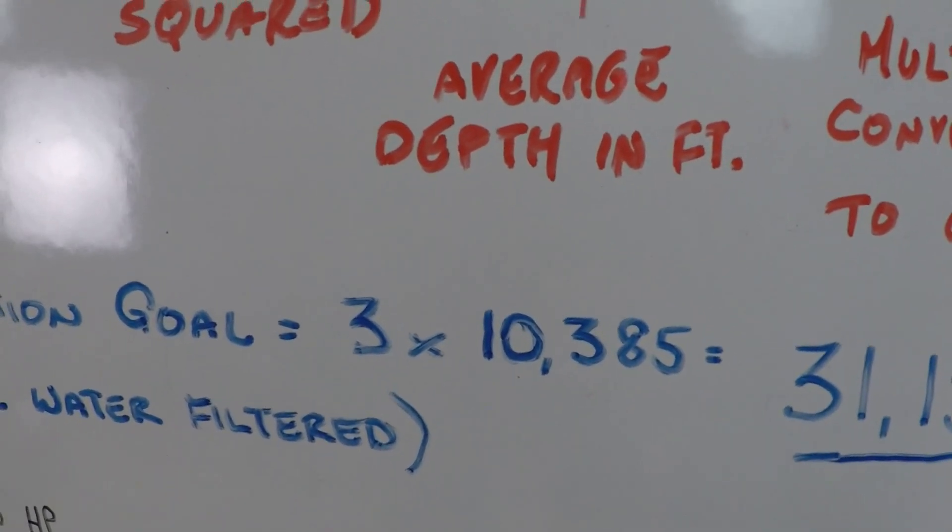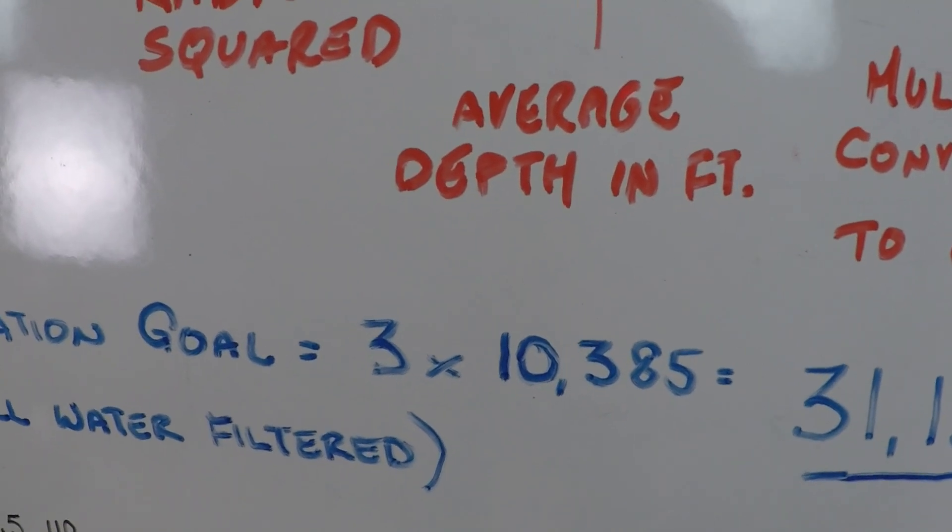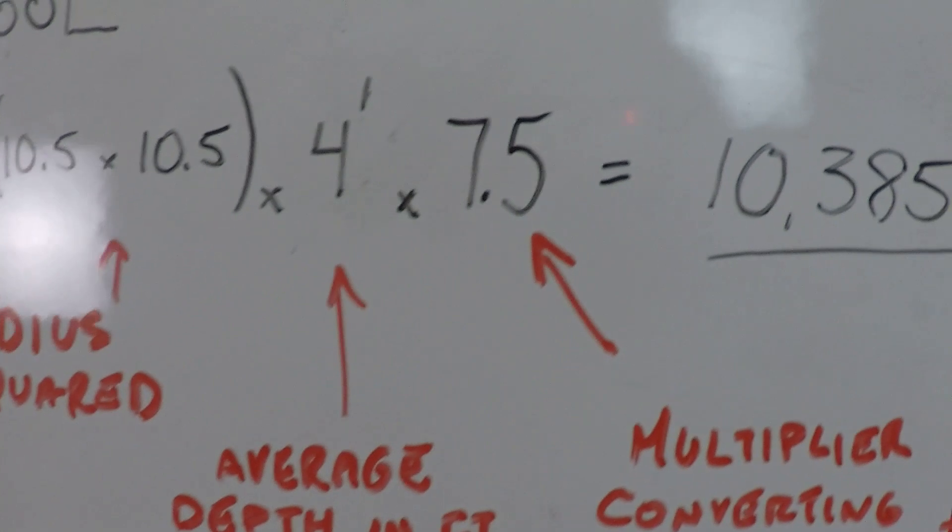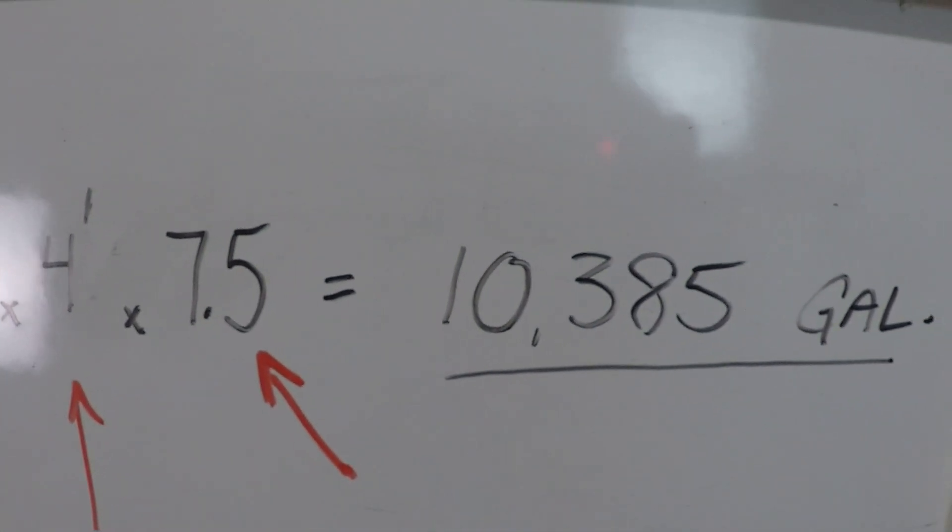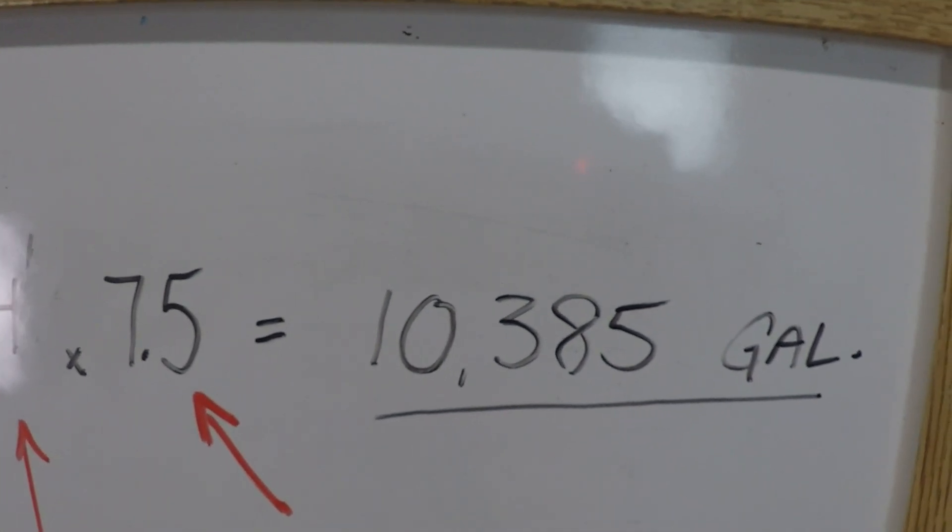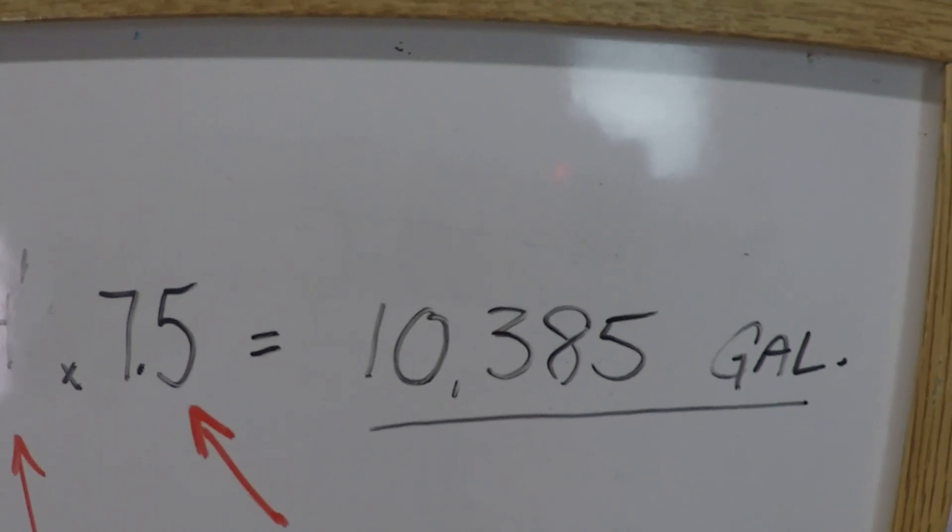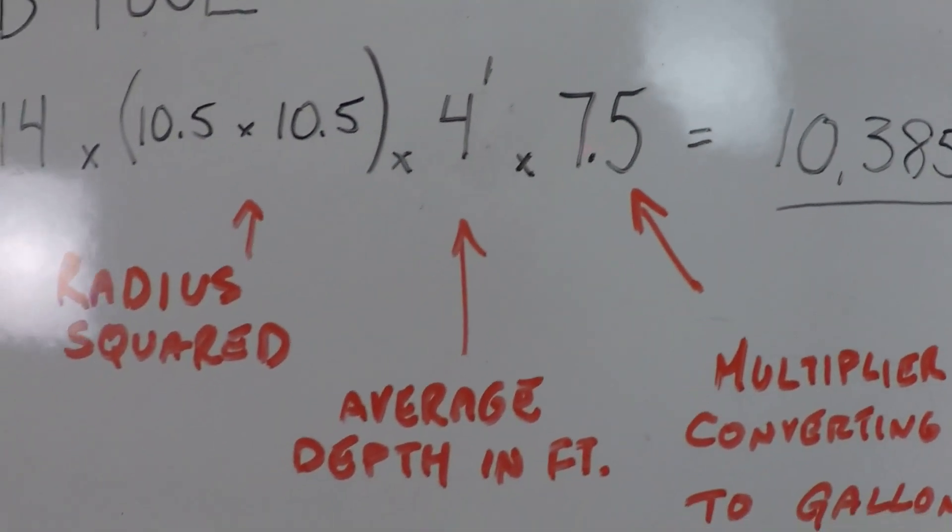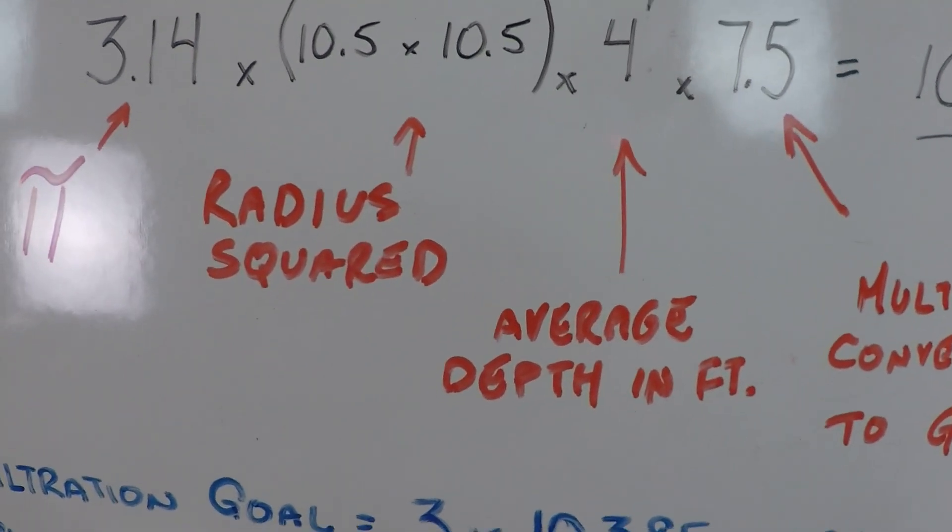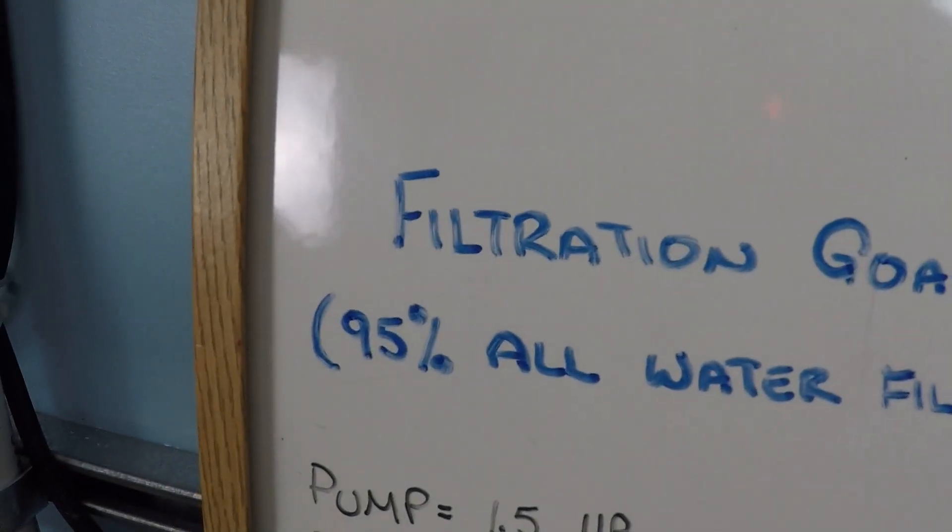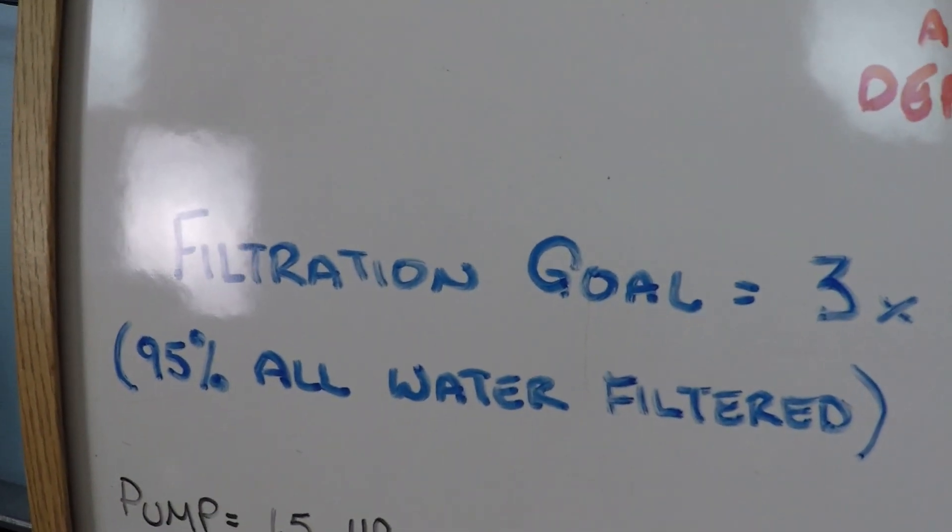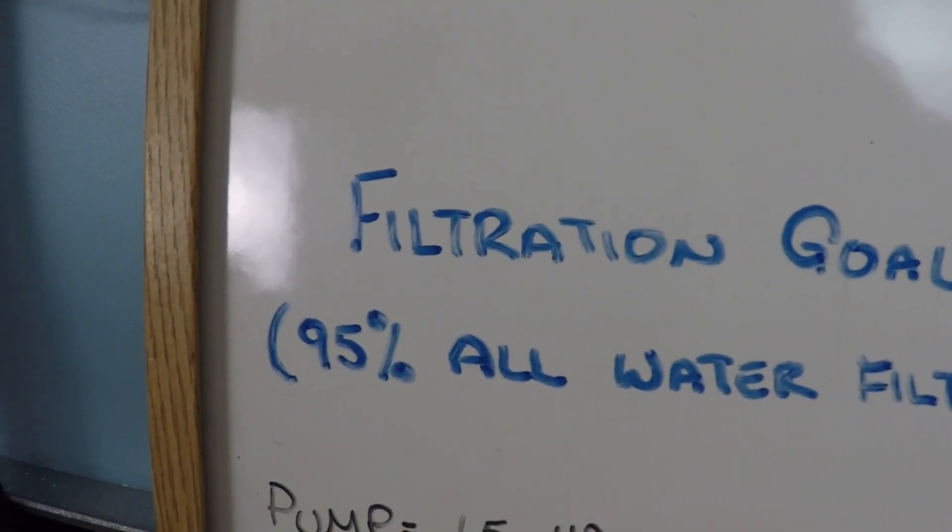The reason is you want to filter all the water in your swimming pool. You can't just pump the volume of the pool one time because you're only going to achieve about 63% of all the water on the first turnover, 86% on the second turnover, and by the third turnover you achieve approximately 95% of all the water in the pool being filtered at least one time. That is the goal.